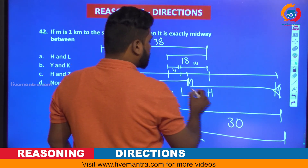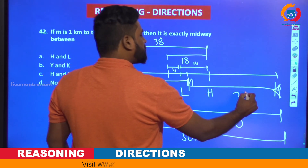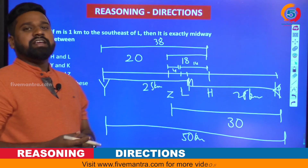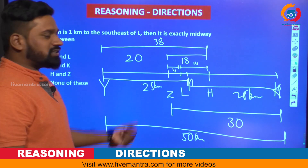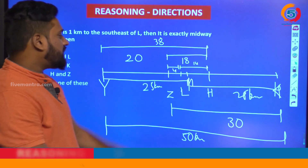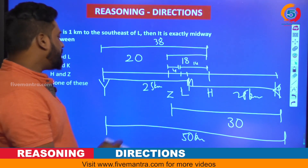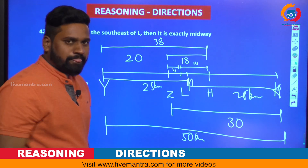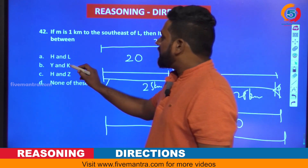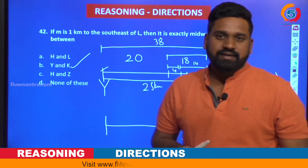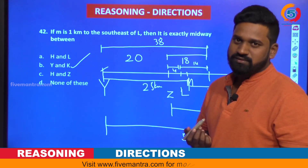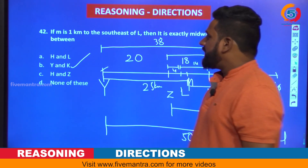This distance M to K is also 25 kilometers because the total distance is 50 kilometers. So M is exactly midway between Y and K. If you observe the options, exactly midway between Y and K — that becomes the correct answer. So the second option is correct.